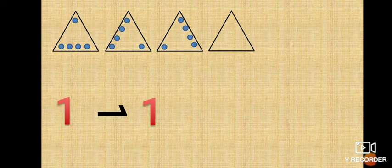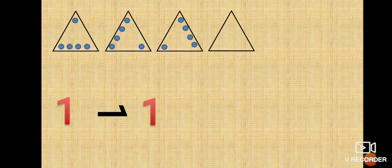Now here you can see there are four triangles. In the first triangle you can see there are some balls. Observe how they are arranged. In the second triangle the same balls have moved from their position and shifted to another place. In the third triangle they shifted and moved further. In the fourth triangle we need to find out where all these balls will be placed.